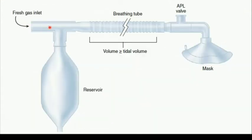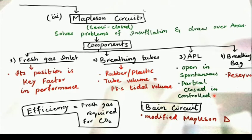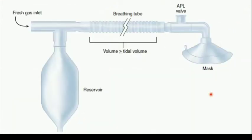During spontaneous ventilation, fresh gas is continuously coming in and when the patient exhales, the valve should be open to let the gases out. During controlled ventilation, the APL valve should be closed during inhalation to build the required pressure, and open during exhalation to let the gases out.